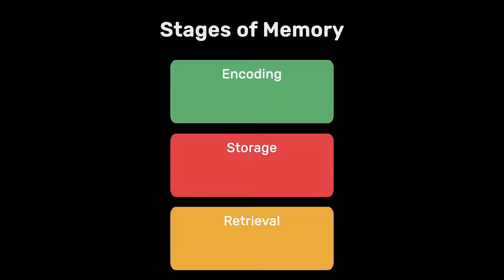Encoding is the phase at which we acquire the information — so how we learn things, how the external world gets transformed into something that we actually memorize.